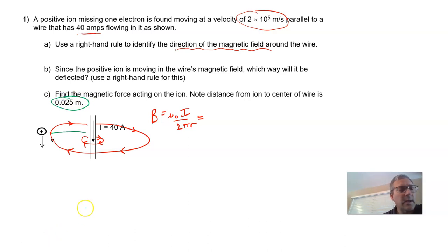That magnetic field strength ends up being, let's work it out. 4 pi times 10 to the minus 7 times the current flow that was 40 amps.